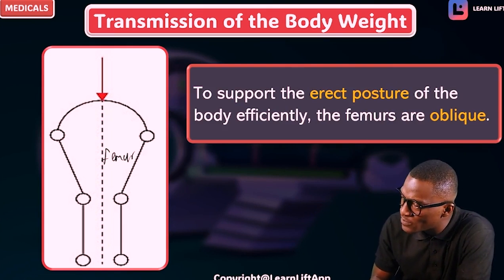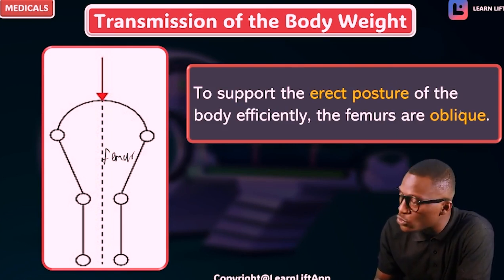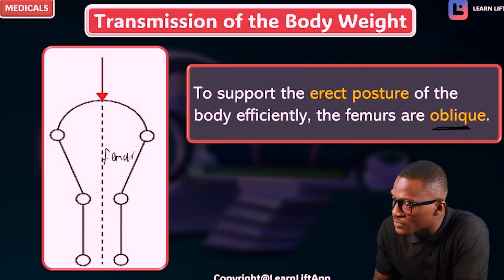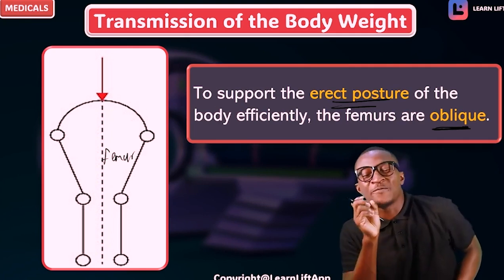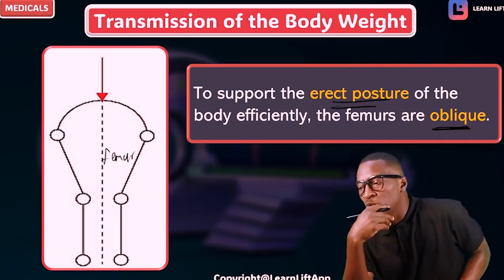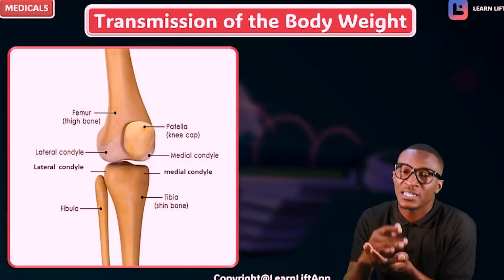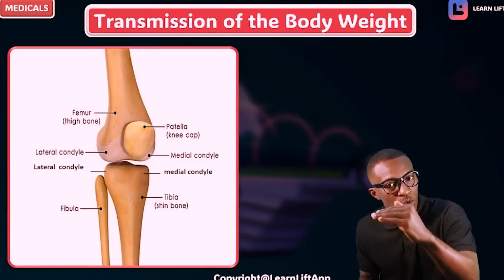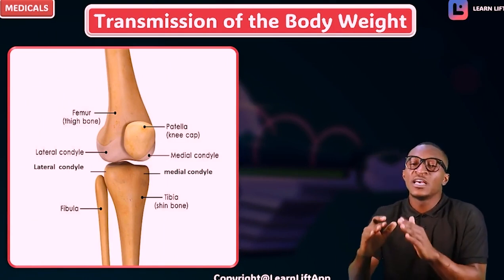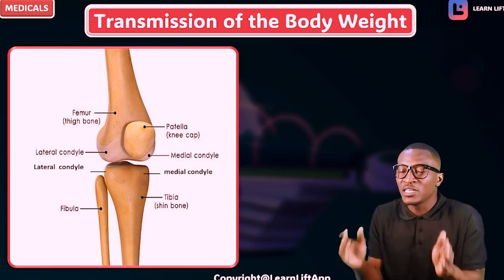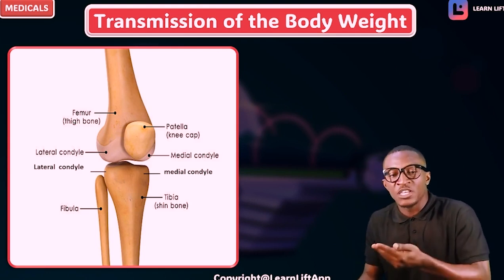To support the erect posture, the femurs are said to be oblique. The weight is transmitted from the vertebral column, goes to the sacroiliac joint, spreads within the girdle, moves toward the hip joint, and from the hip joint it goes to the femur.